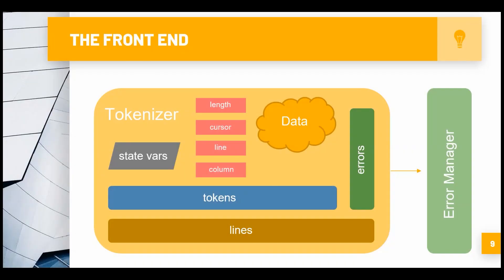Now we're going to look at how my tokenizer is laid out. My tokenizer is pretty straightforward. You have your data, which is the data you get from the file you're tokenizing. You're going to have your error management system that fires errors off if it finds anything wrong. You're going to have your columns - you need to track where you are in the file, what line you're at, what column you're at. And then you're going to have a cursor, which is effectively the index of where you are in the file.